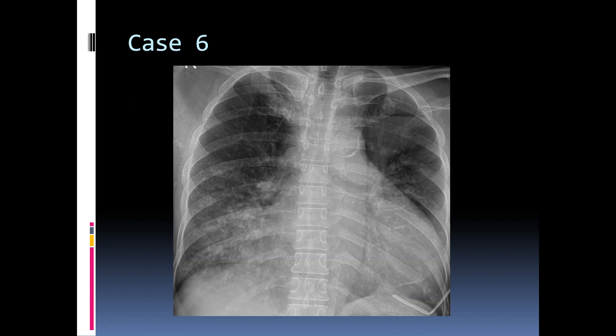A chest radiograph shows ill-defined airspace opacification in the right lower zone with silhouetting of the right heart border. So this is a case of right middle lobe pneumonia.